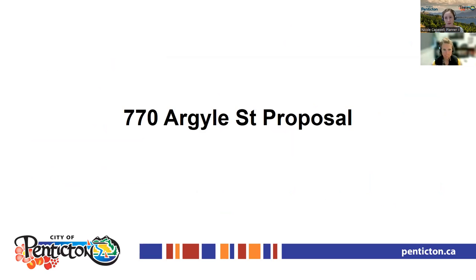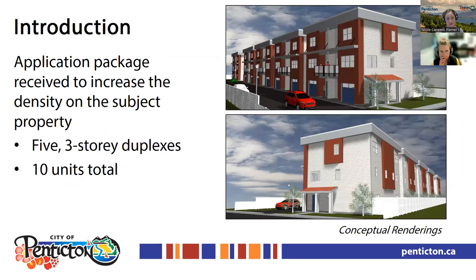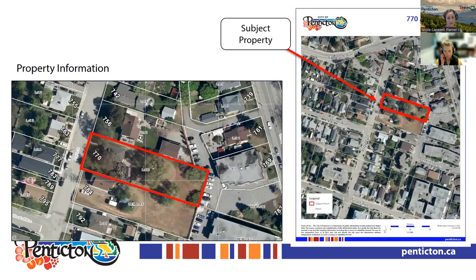Now a brief overview of the proposal. The property being discussed today is 770 Argyle Street. The proposal being considered would allow for multi-family residential development. The applicants are proposing to construct five separate duplex buildings, which would allow for 10 units on the subject property. You can see some conceptual renderings showing what the buildings would look like — five three-storey duplexes. In order to proceed, the applicant is required to change the OCP future land use designation from detached residential to ground-oriented residential.